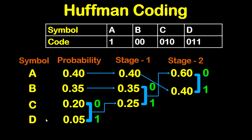Now for D, trace the path. We have 1, then 1, then 0. Reading numbers from right to left: 0, 1, 1. So the code for D is 0 1 1. And this is the final result.